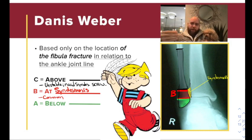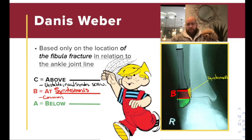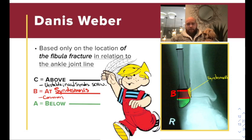The fractures are classified as A, B, and C. A is most distal and C is proximal, so it goes from A, B, C — distal to proximal. If there's a fracture below the level of the ankle syndesmosis, it's called a Weber A. If it's at the level of the ankle syndesmosis, it's a Weber B. And if it's above the ankle syndesmosis, it's a Weber C.